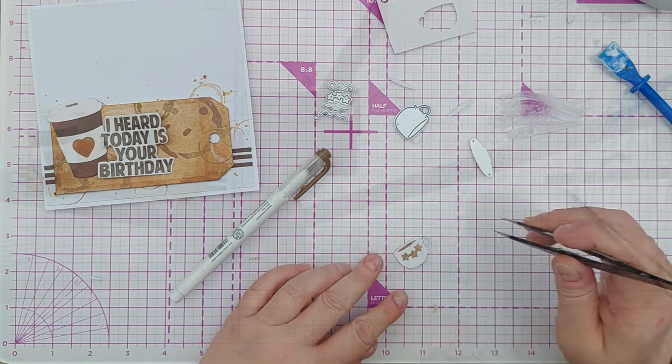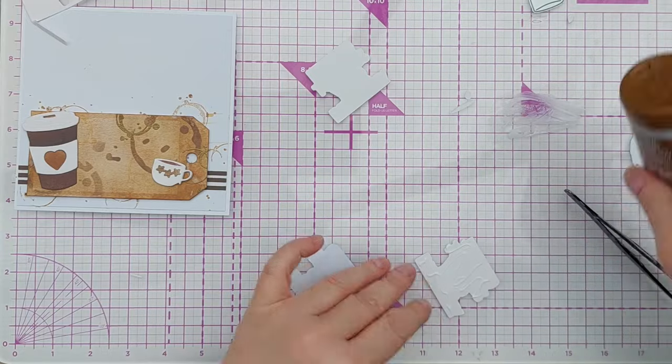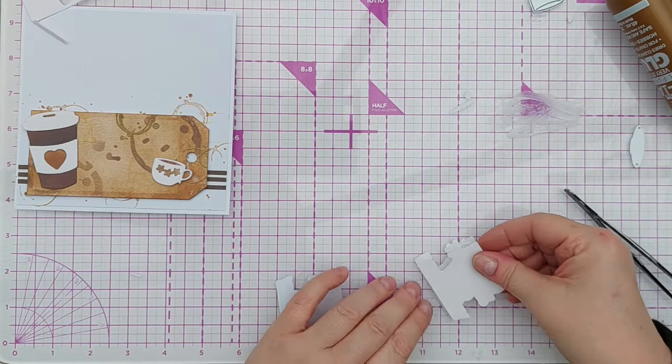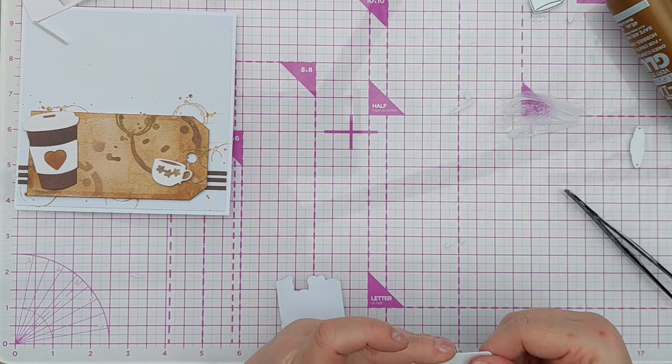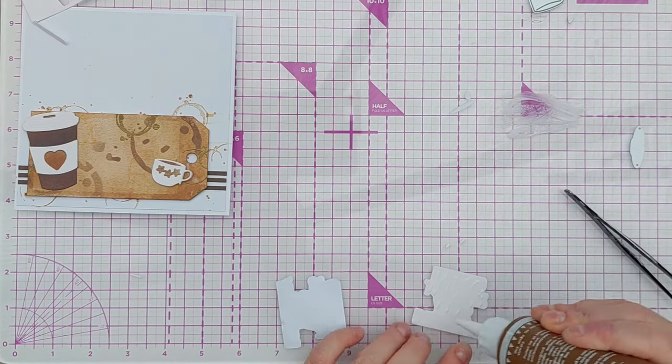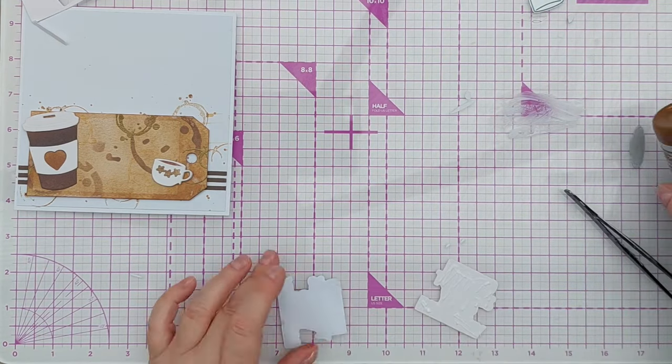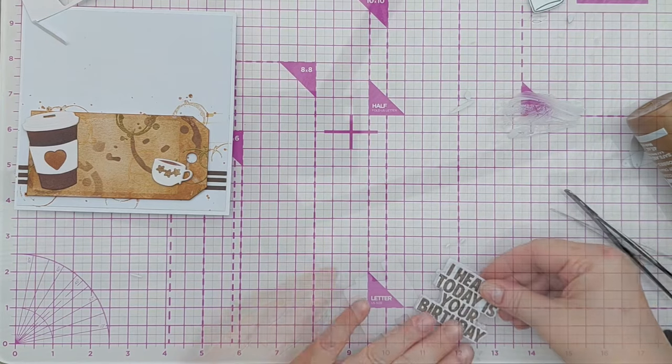To finish off my sentiment piece I die cut two more of the shapes out of cardstock, layered them up, and added them to the back of the stamped piece. And I did this because I wanted to give the sentiment a bit of dimension but I didn't want to add a whole nother layer of craft foam, so this is three die cuts deep.